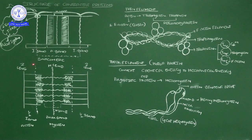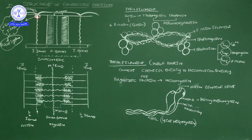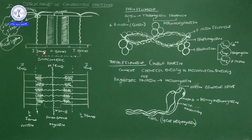Now, that myofibril structure has alternating stripes — light and dark bands. Those alternating stripes are created by the presence of thin and thick filaments. This is the muscle myofibril. This is the light filament — I-band — and this is the dark band — A-band. I-band is also called the isotropic band. A-band is also called the anisotropic band.